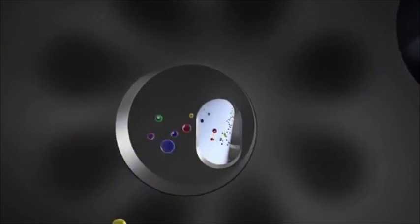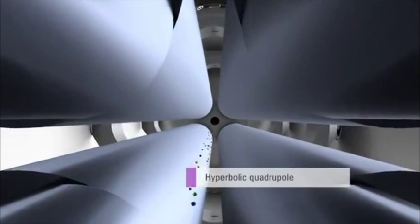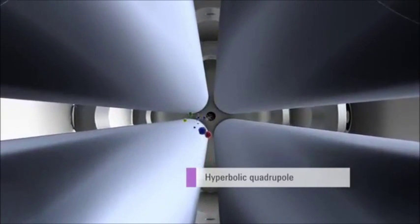From the collision reaction cell, the ions pass into the quadrupole mass analyzer, which separates ions based on their mass-to-charge ratio.